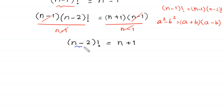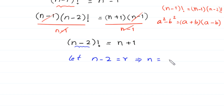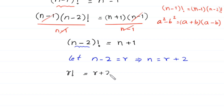Next, we suppose that n minus 2 is equal to r. Let n minus 2 equal r, which implies n equals r plus 2. Substituting the value of n minus 2 as r and n as r plus 2 into this equation, it becomes r factorial is equal to r plus 2 plus 1, which is r plus 3.